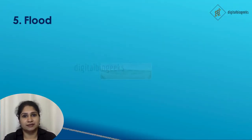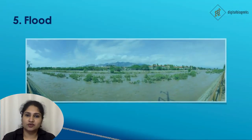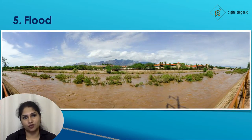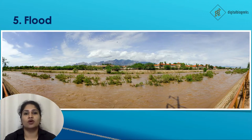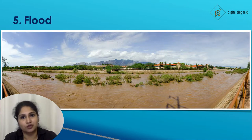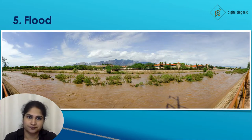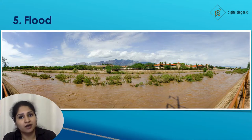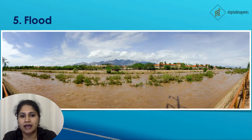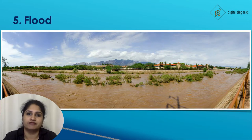Next is flood. Forest trees absorb rainwater and allow it to percolate into the ground. But when deforestation happens it decreases the water-holding capacity of the soil due to the lack of trees. This reduces the amount of water absorbed into the ground, so the amount of water on the land increases, which leads to flooding.